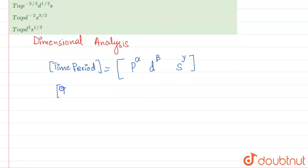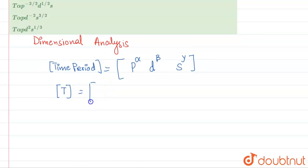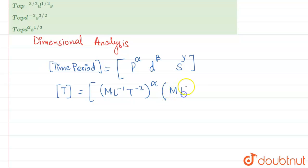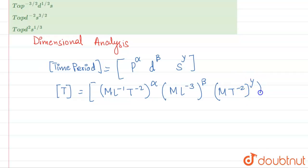The time period has dimension T. There will be a proportionality constant k. Pressure is force per unit area, so its dimension is ML⁻¹T⁻² to the power alpha. Density is mass by volume, so it is ML⁻³ to the power beta. Surface tension is MT⁻² to the power gamma.